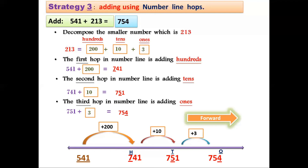That is all for Part 1 of our lesson. In this part we covered three addition strategies: adding using place value blocks, adding using decomposing numbers, and adding using number line hops. In Part 2 we will continue with a new addition strategy and learn how to round numbers to the nearest hundred and to the nearest thousand. Don't forget to watch Part 2! Goodbye, my dear students — thank you!